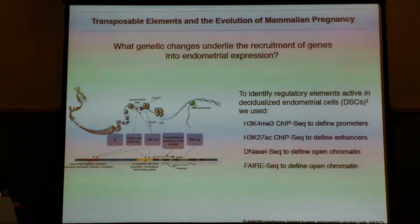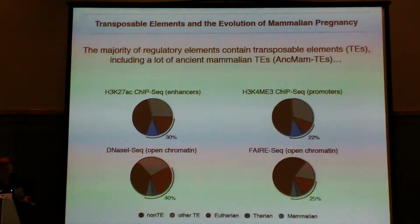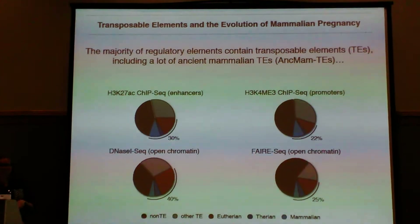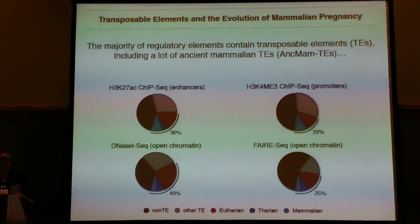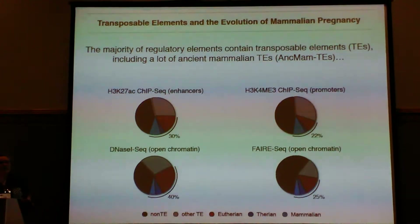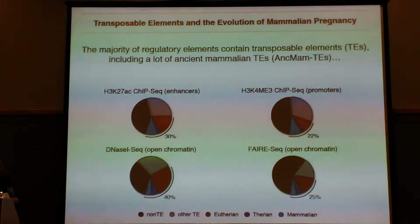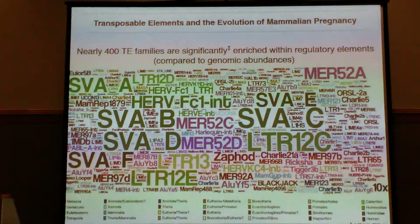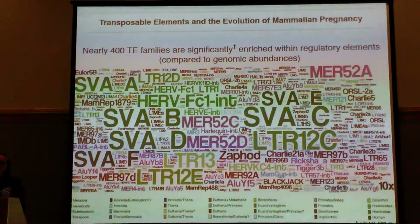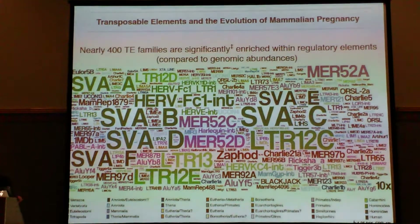Once we had these regions, we looked within them at their composition. We found that a lot of these regulatory elements contain transposable elements, including what we call ancient mammalian transposable elements — the mammalian, therian, and eutherian specific ones. When we break it down into transposable element families, we find that 393 transposable element families are actually more enriched within these regulatory elements than we would expect by chance compared to genomic equivalences.